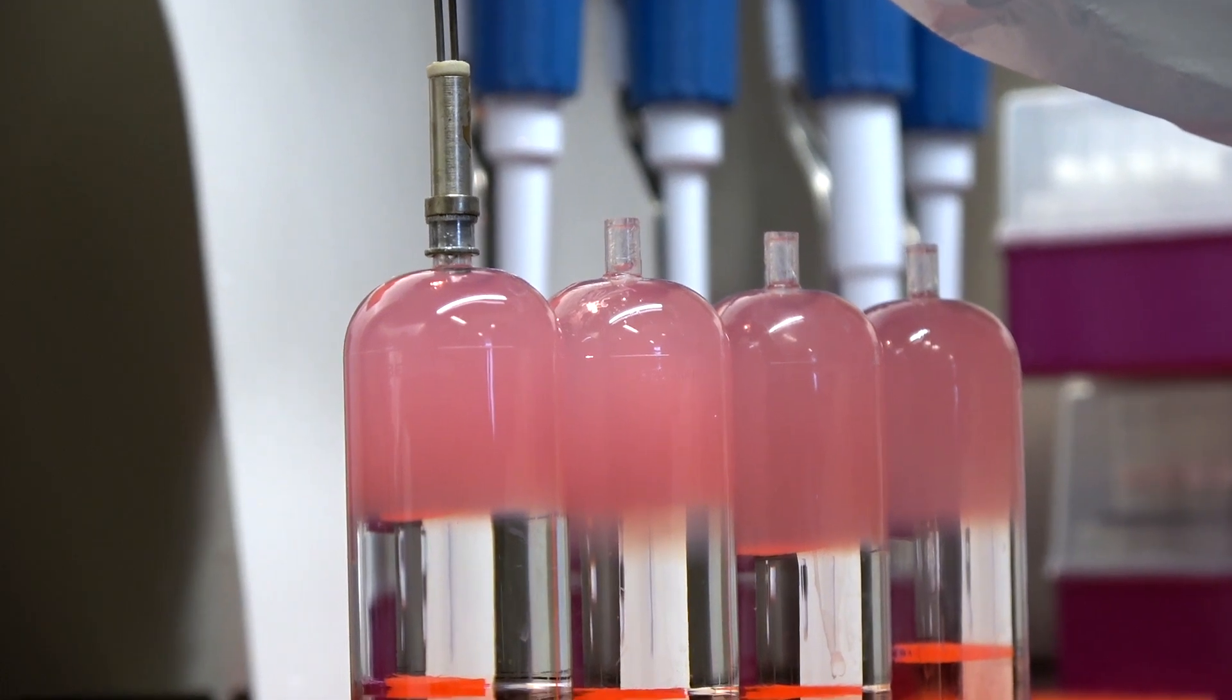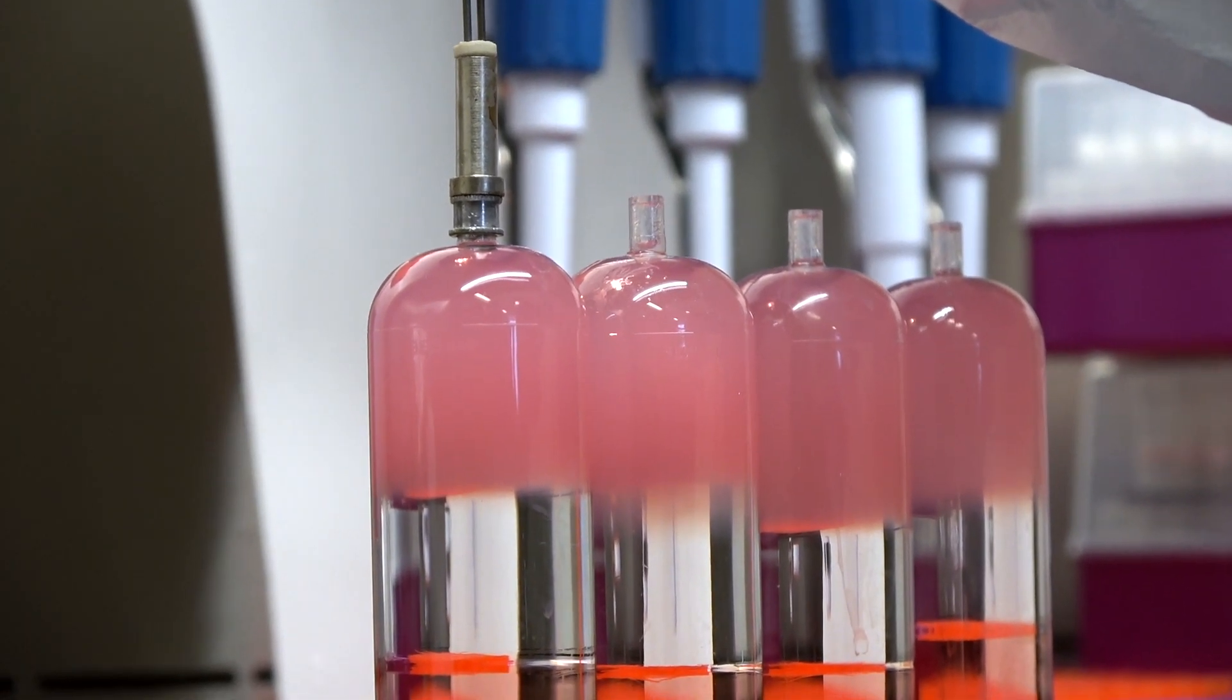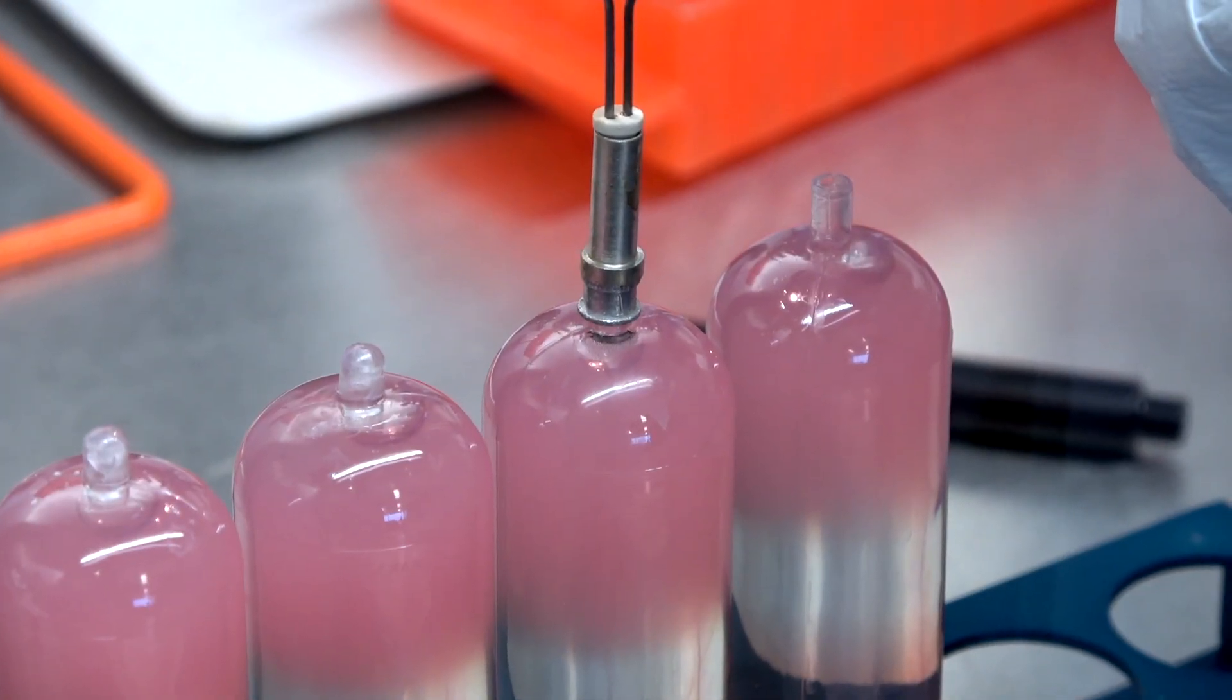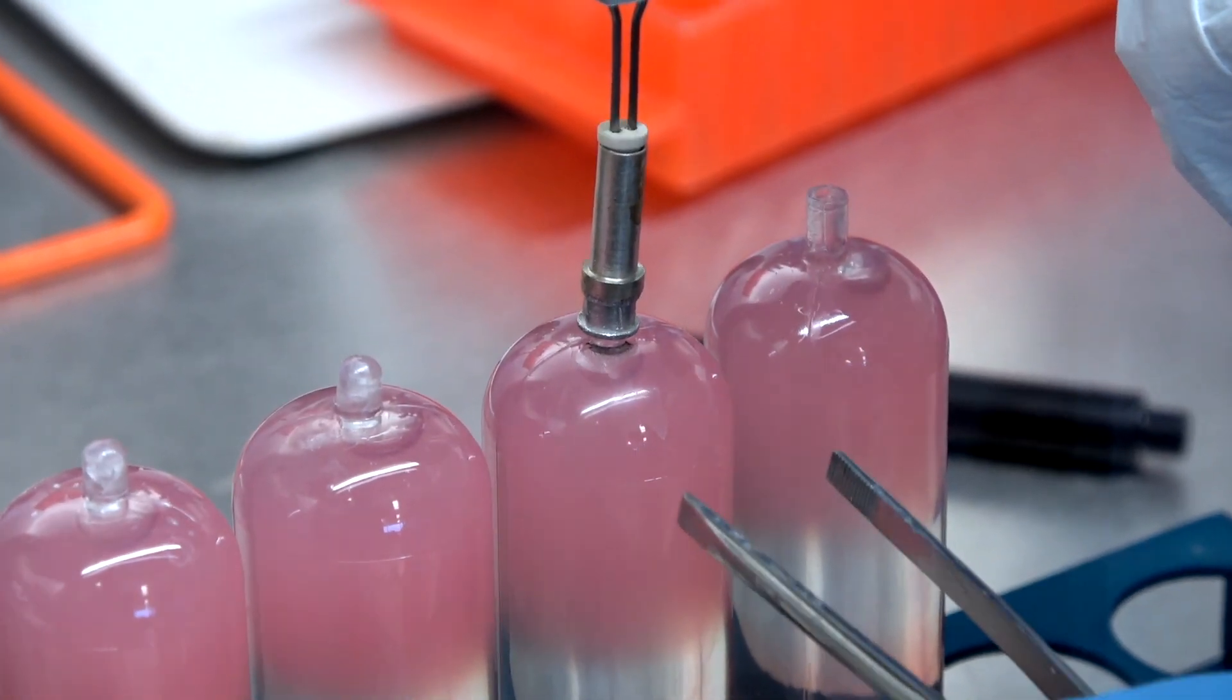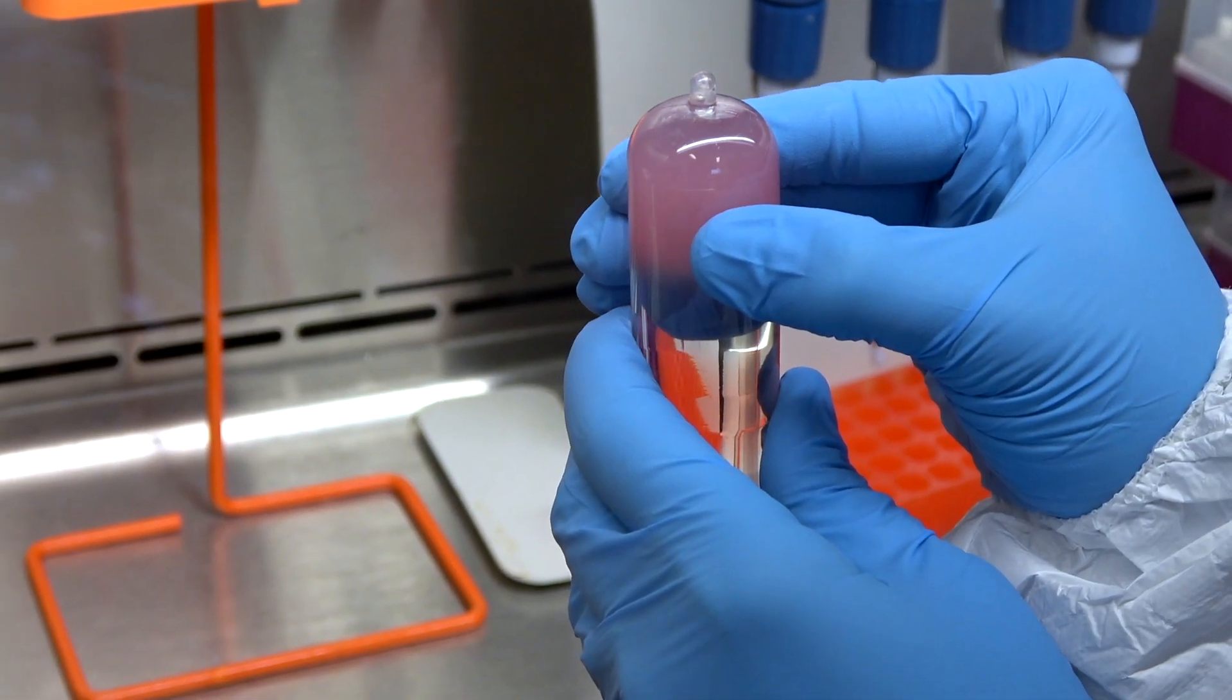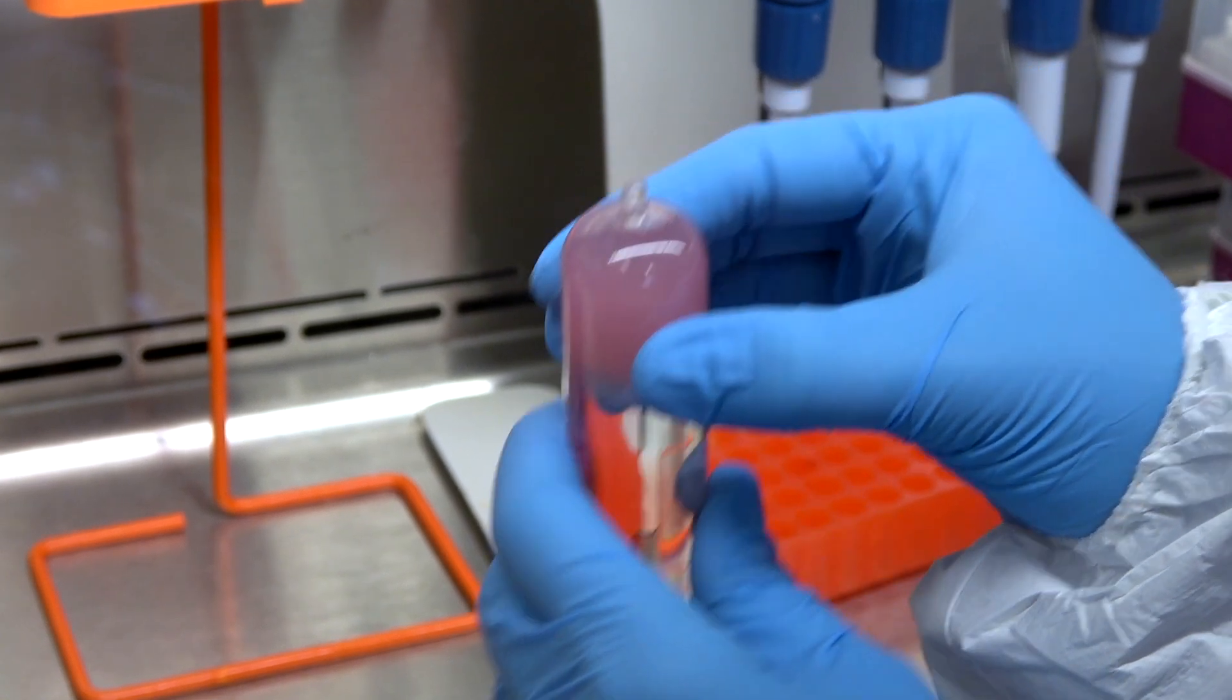Top off the column with PBS and seal it, avoiding air bubbles, which can cause the column to collapse under the vacuum conditions of the ultracentrifuge. Label the tube multiple times in different spots because the marker easily comes off. Once the column is sealed, squeeze it gently to confirm the seal is intact.